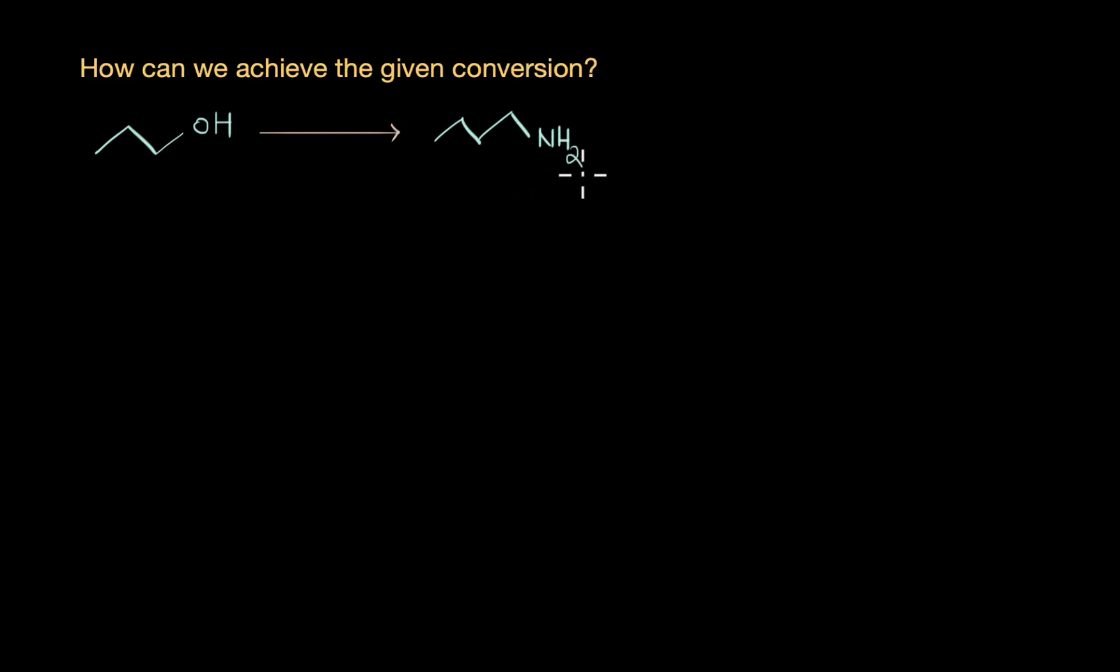By now we have discussed a number of chemical reactions that amines undergo and the various ways by which these amines can be prepared, like unique reactions such as Gabriel phthalimide reaction, Hoffmann bromoamide reactions, and so on. In this video we are going to solve a couple of conversion questions that might involve all of these reactions you studied in this chapter. This is going to be a brief recap.